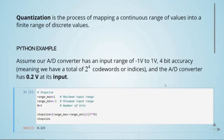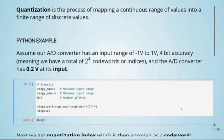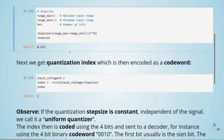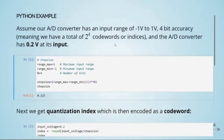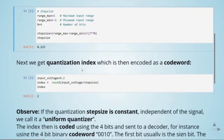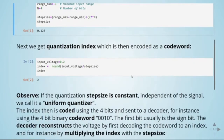A very important thing we have now is the step size. Using 4-bit accuracy with a range from minus 1 volt to 1 volt, our step size will be 0.125. From the step size we get a quantization index that is later encoded as a code word. When our input voltage is 0.2 volts, we apply rounding of the input voltage divided by the step size to get an index — in this case the index is equal to 2. When the step size is constant, we call our quantizer uniform.